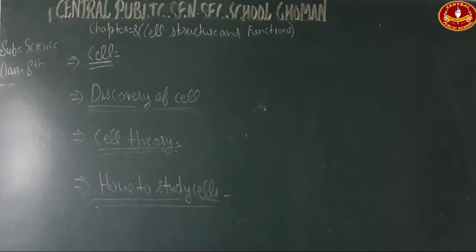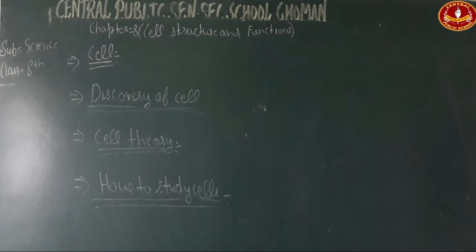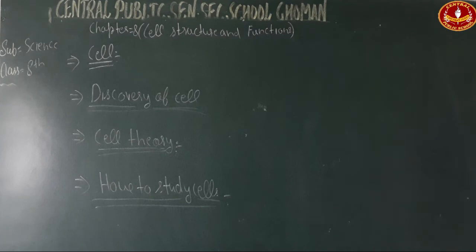After that came the cell theory. This concept states that all living organisms — plants, animals — are made of cells. The cell theory has two main points: first, cells are the structural and functional unit of living organisms; second, cells arise by the division of pre-existing cells.